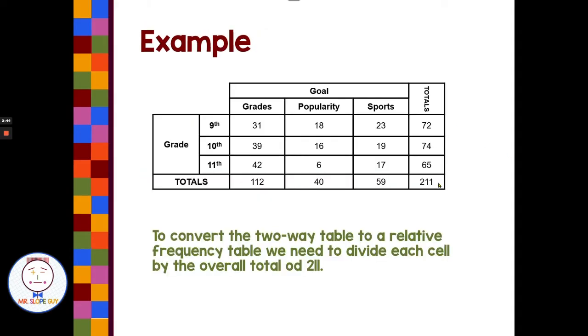So we're going to take our two-way table and we're going to convert it to a relative frequency table. And in this case, our overall total is this 211 number. So to convert our two-way table to a relative frequency table, we need to divide each cell by the overall total of 211.